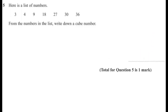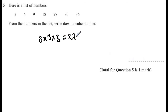Question 5. Here is a list of numbers: 3, 4, 9, 18, 27, 30, 36. From the numbers in the list, write down a cube number. The answer is 27, because 3 times 3 times 3 is equal to 27.